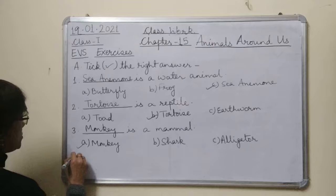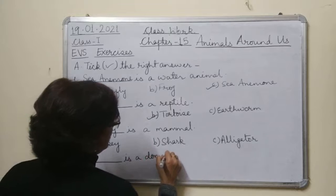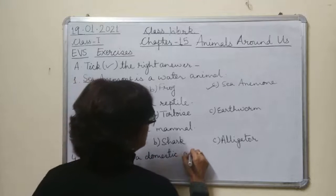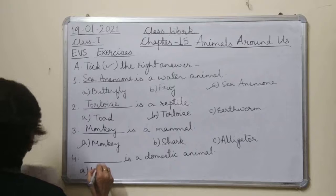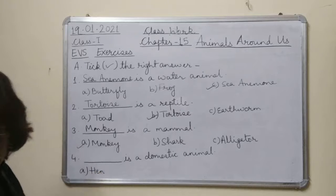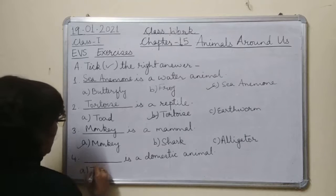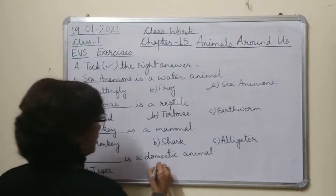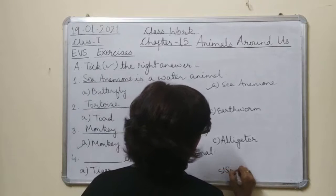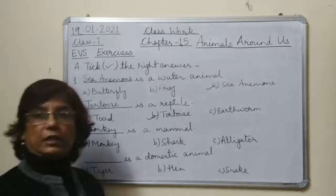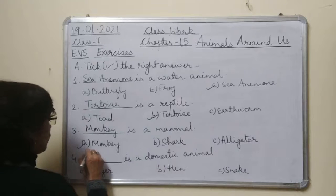Fourth question: which is a domestic animal? The options are a) tiger, b) hen, and c) snake. Tiger is a wild animal, snake is also a wild animal, and hen is a domestic animal. So the correct option is b — hen.